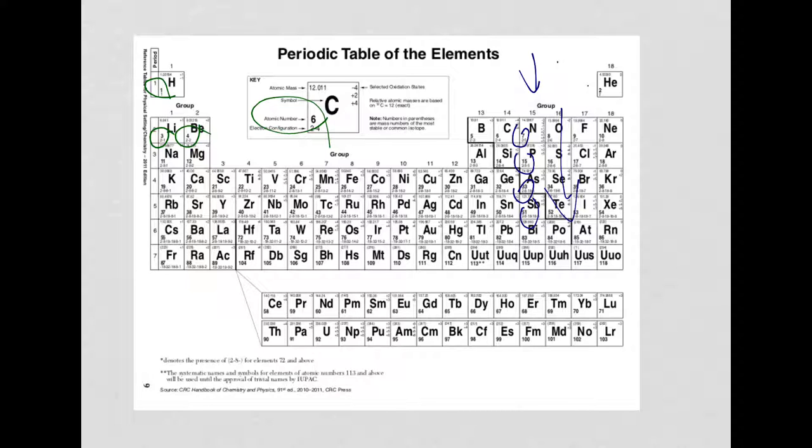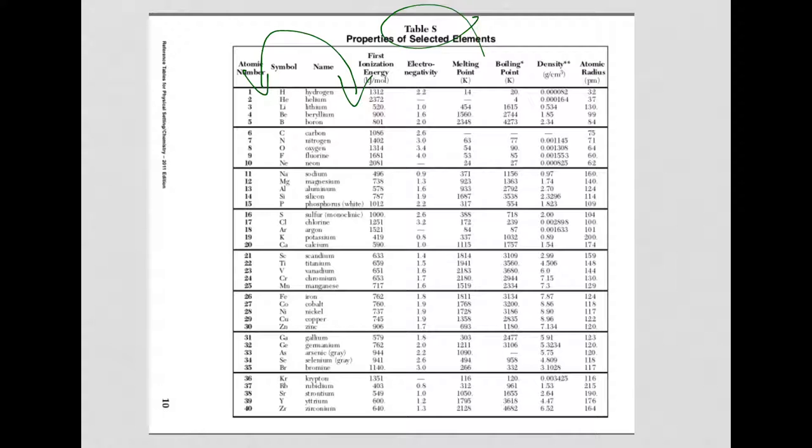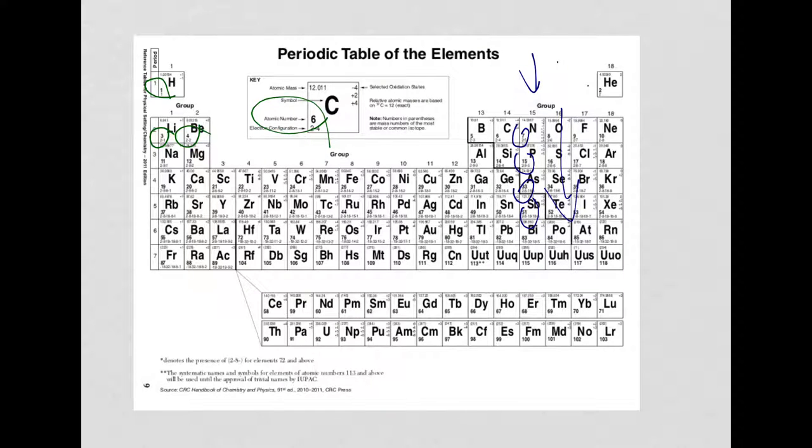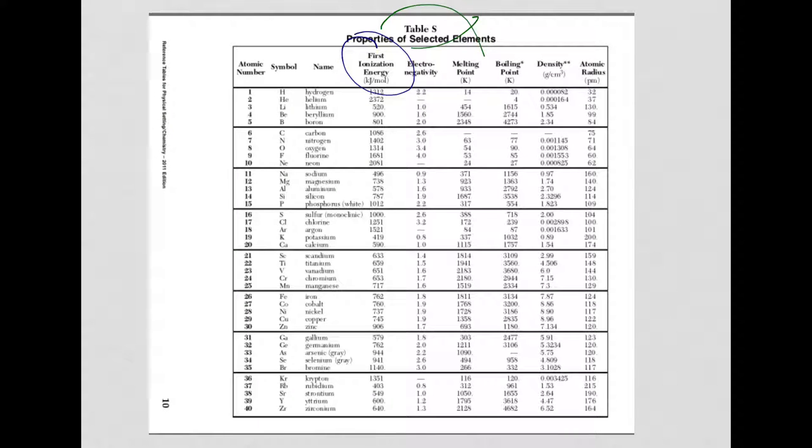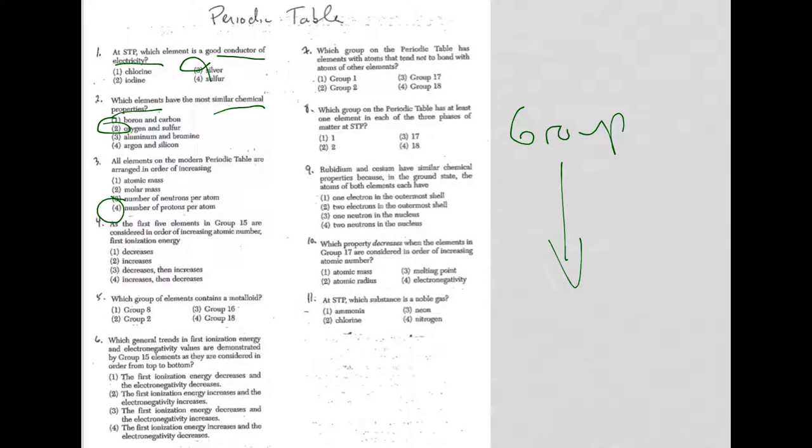Well, reference table S, remember, you have ionization energies. They're right here. Take the time if you're not sure of the periodic trend here. So what do I have? I have group 15. I have nitrogen, phosphorus, arsenic. So let's see. Nitrogen, phosphorus, arsenic. I don't really have to do more than three. Look what's happening to the number. The number, of course, is decreasing or going down. So there's my answer. Decreases or choice one.